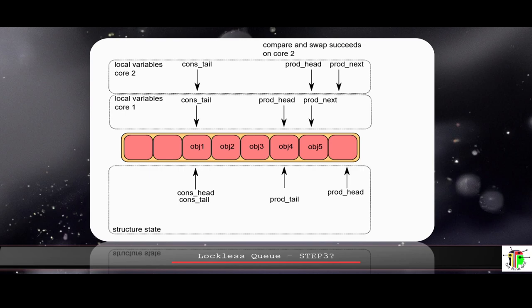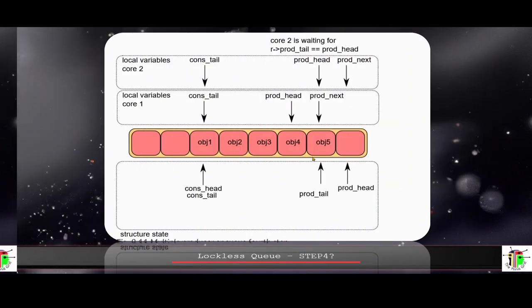Once your atomic operation succeeds, you actually store your data at the won location. Core one won object four and stored its data there. Core two won object five and stored its data there. Prod_head is now in the correct location, pointing to the next free entry, and both cores have succeeded. What remains now is to move prod_tail.